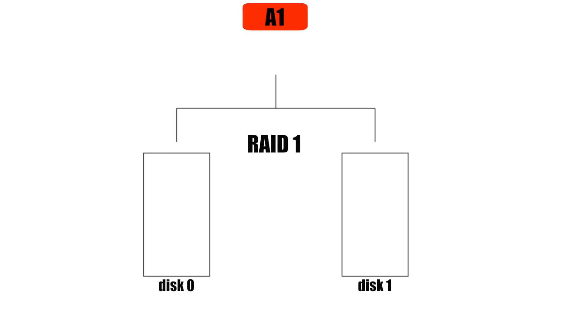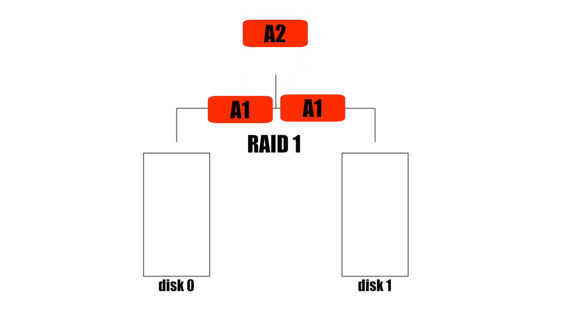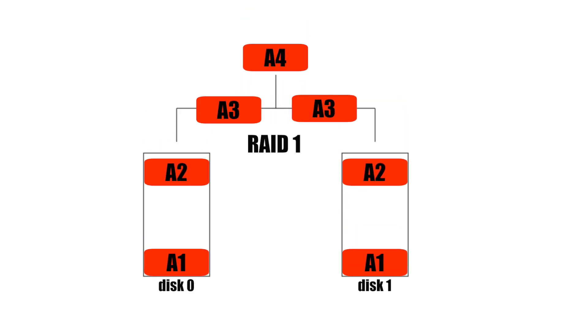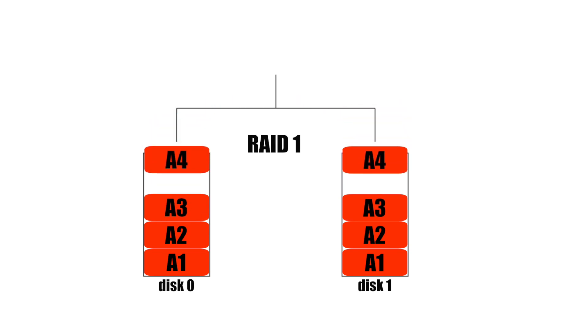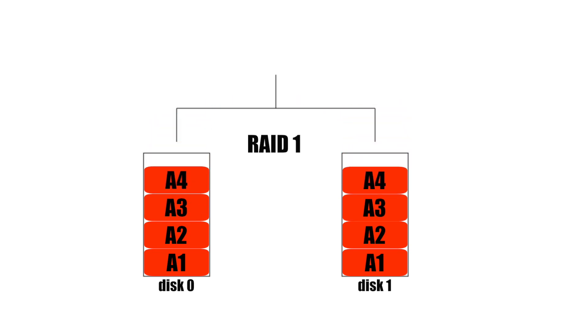RAID 1 on the other hand is all about reliability. It works by mirroring your files so that each drive has a copy of your data. Every single drive would have to fail before you lose anything. If you had two 4TB hard drives then you would have 4TB of storage space.